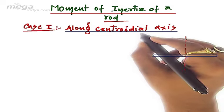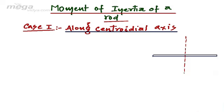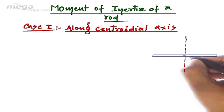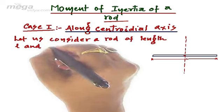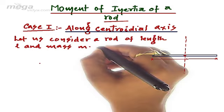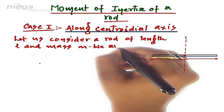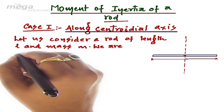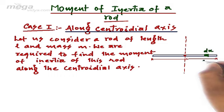The centroidal axis basically means the axis passing through the center and perpendicular to the plane. Let us consider this rod, with length l and mass m. We are required to find the moment of inertia of this rod along the centroidal axis, that is the axis passing through the center and perpendicular to its plane. For this, let us consider an elementary length dx having mass dm.